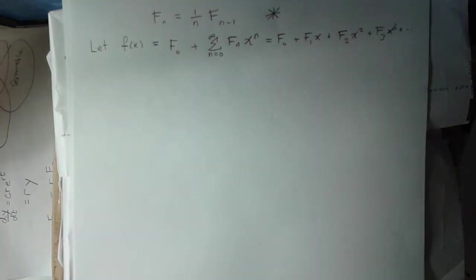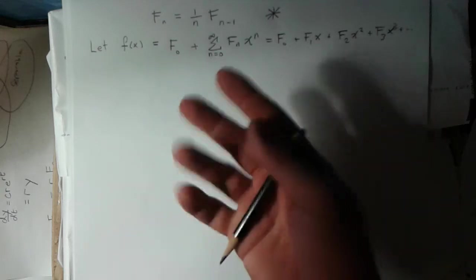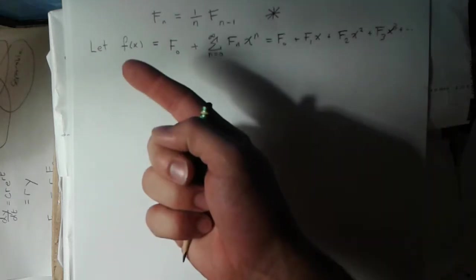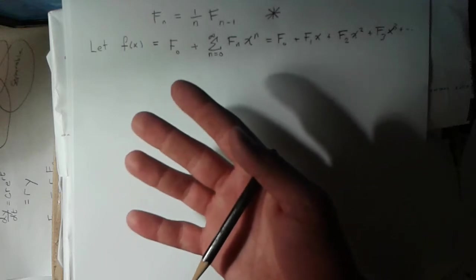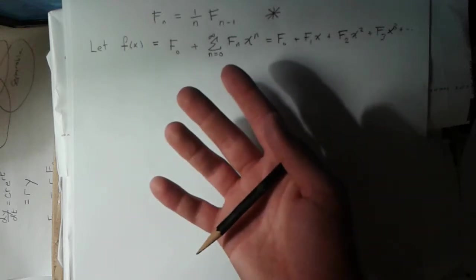The idea is, if I can learn something about f of x by just manipulating this, and what it's going to be realistically is I'm going to find a differential equation in terms of f of x. If I can then solve that differential equation, figure out what f of n is.